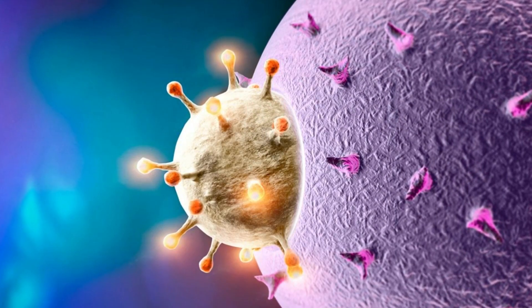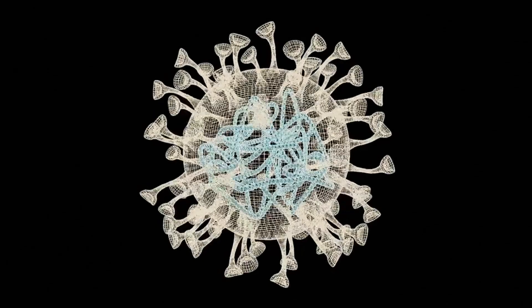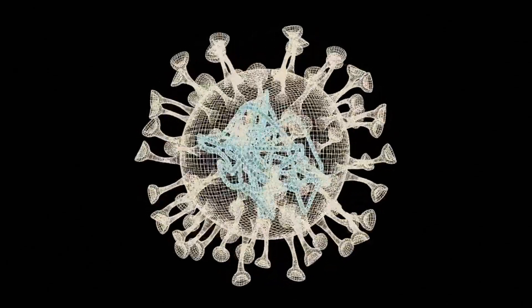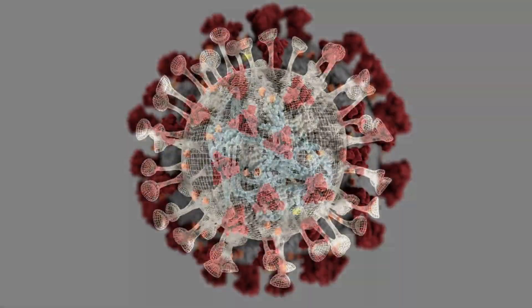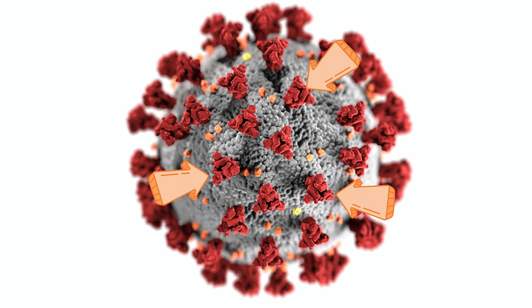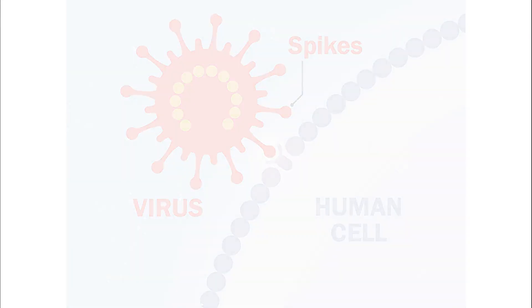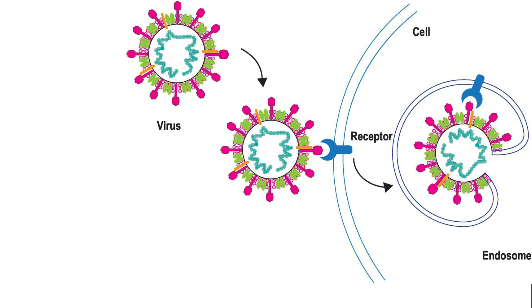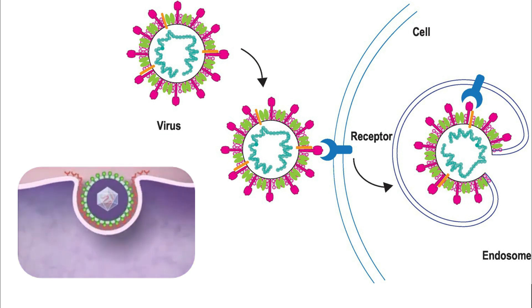Section 1: Viral Entry. The first step in a viral attack is the entry to the host cell. Viruses are like master infiltrators, possessing specialized structures that enable them to bypass the cell's outer defenses. Some viruses have protein spikes or glycoproteins on their surface that bind to specific receptors on the cell's membrane, much like a key fitting into a lock. This interaction allows the virus to gain entry into the cell, hijacking its machinery for their own purposes.